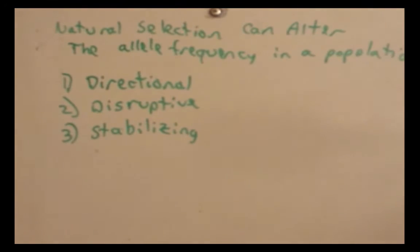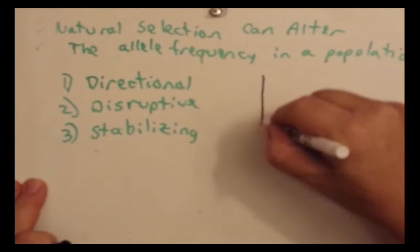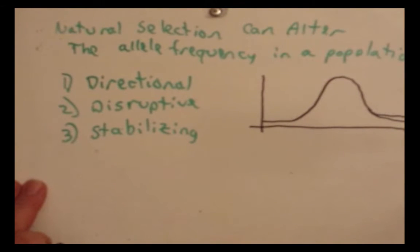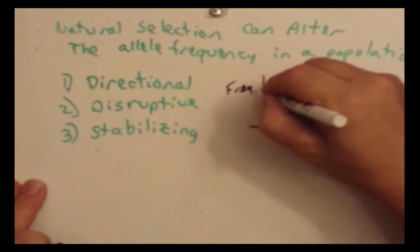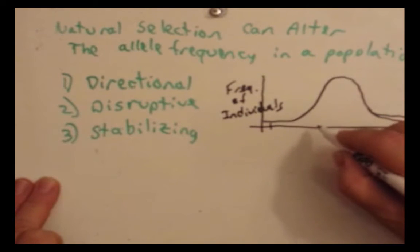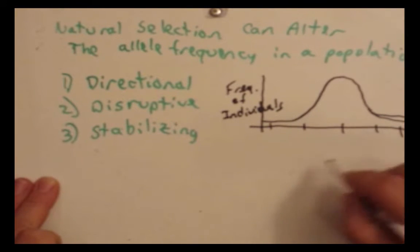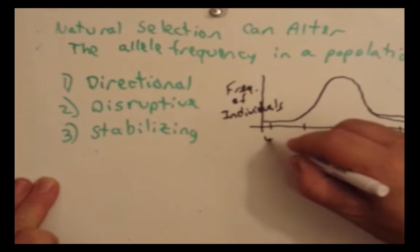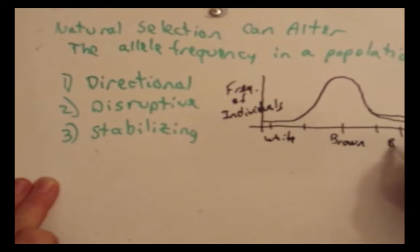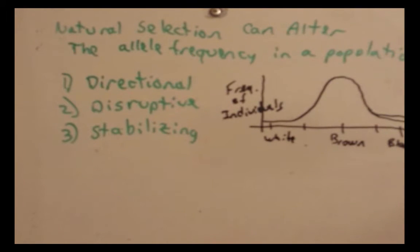When we talk about these selections, we'll use a curve where the vertical axis is frequency of individuals and the horizontal axis is the different phenotypes. For example, using mouse coat color, you might have white mice on one end, brown in the middle, and black at the other end. Let's first talk about directional selection.